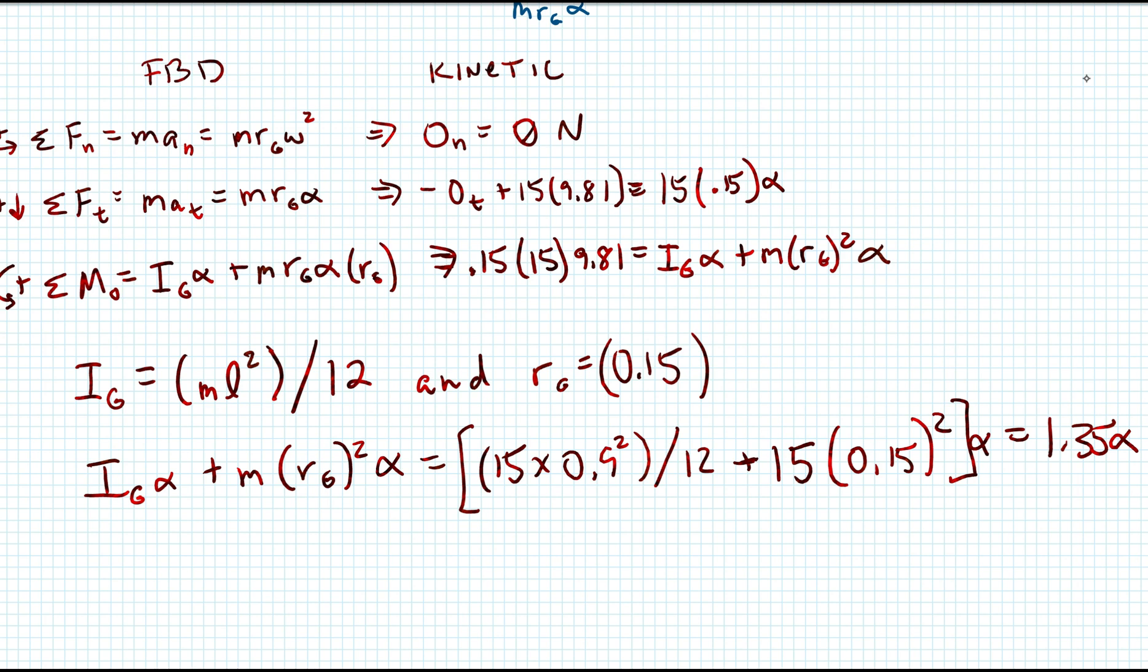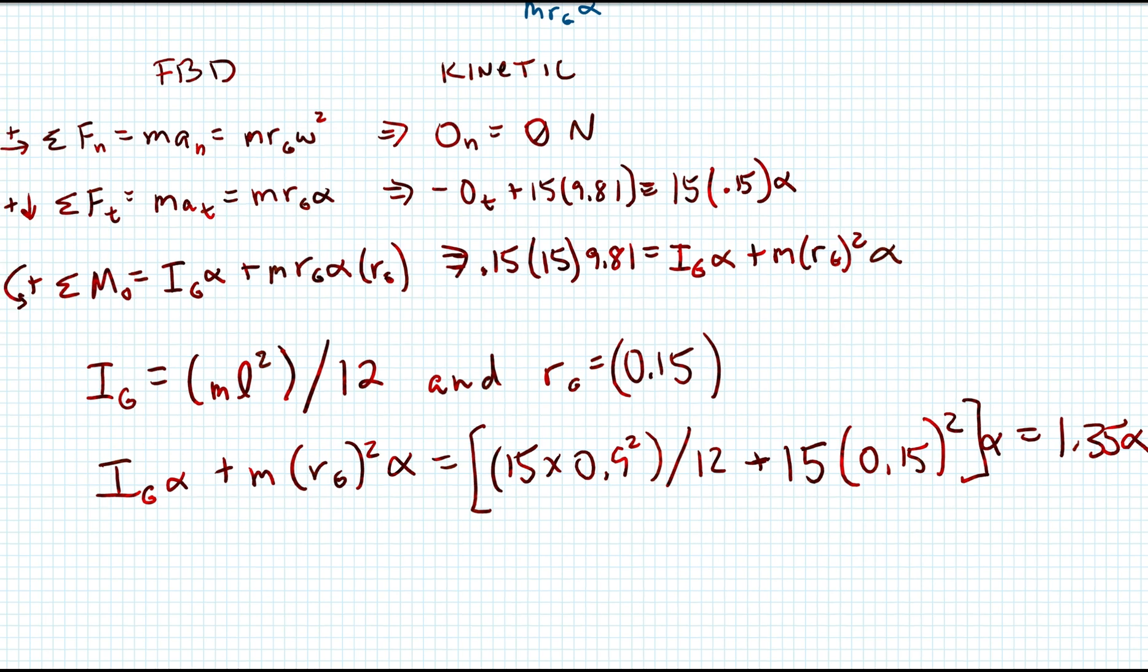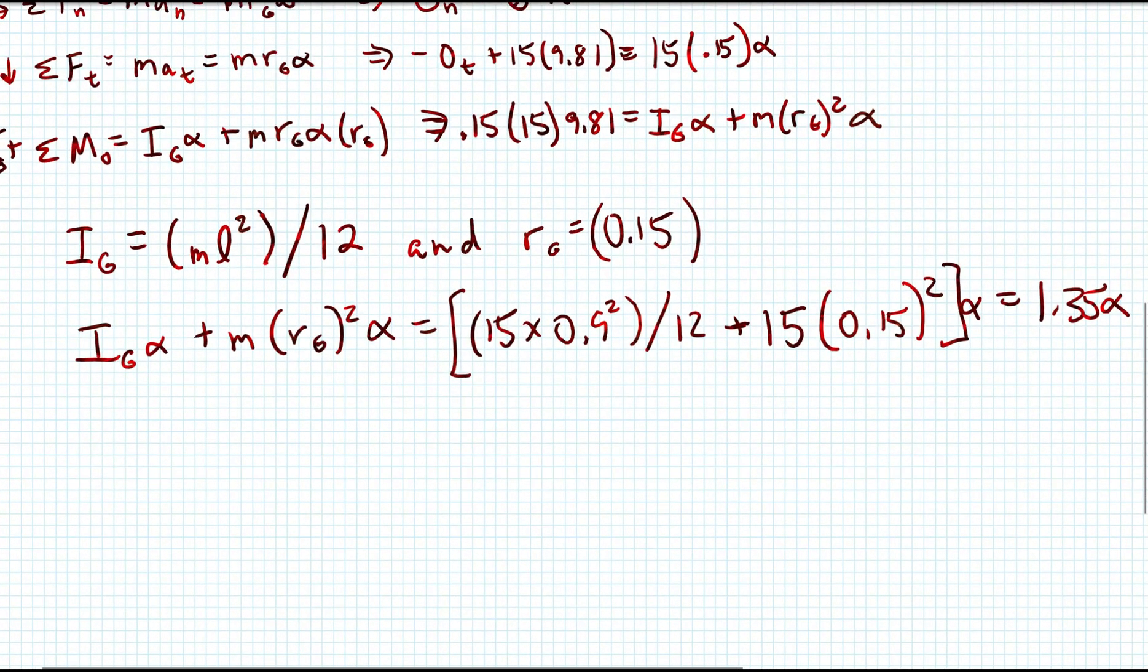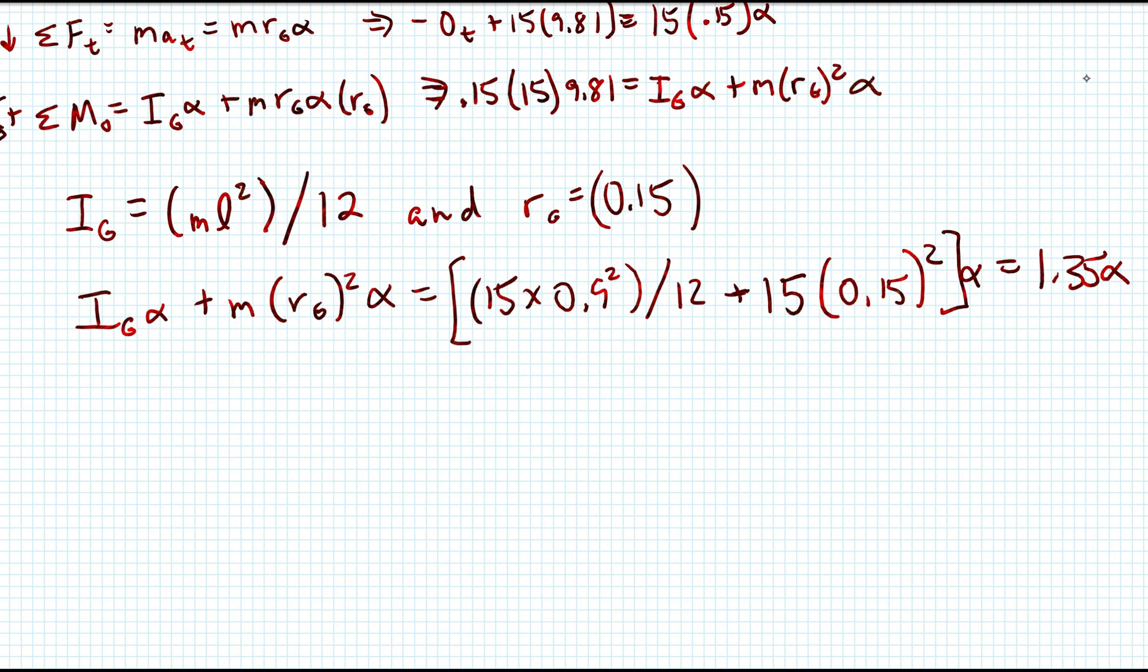After substituting, we'll have 22.07 equals 1.35 alpha. So alpha is 16.4.